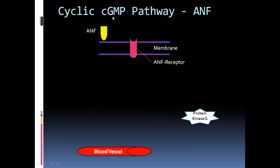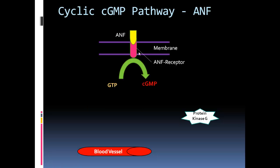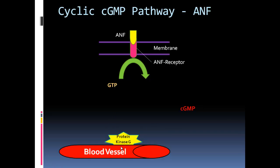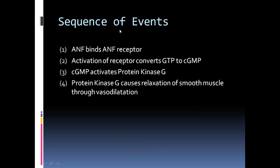In the cyclic cGMP pathway via ANF: ANF comes in and binds to the receptor site, GTP is expended producing the metabolite cGMP. cGMP then binds to and activates protein kinase G. Protein kinase G acts on blood vessels, causing them to dilate. The sequence is: ANF binds to ANF receptor, receptor activation converts GTP to cGMP, cGMP activates protein kinase G, and protein kinase G causes relaxation of smooth muscle through vasodilation.